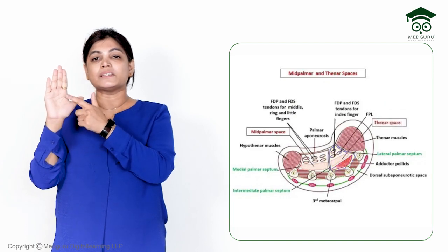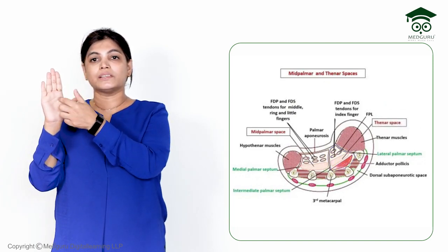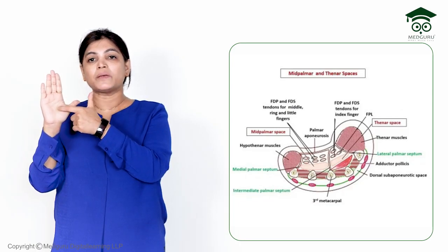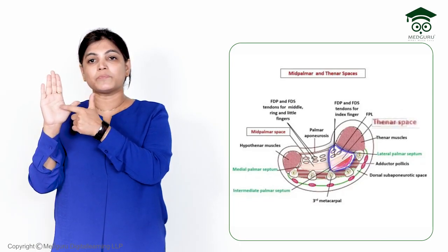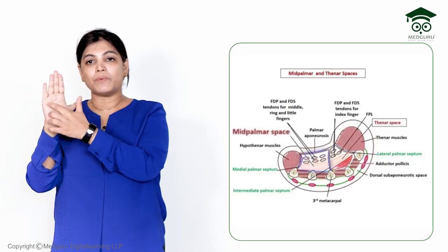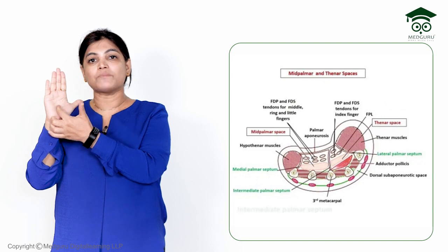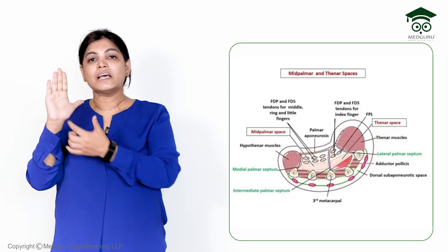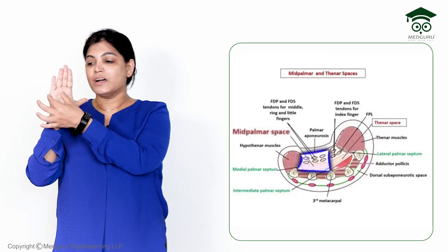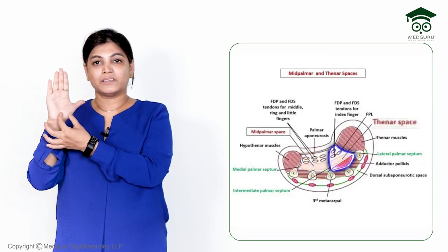The lateral boundary separates the mid palmar space from the thenar space. The thenar space lies below the lateral fingers. In between these two spaces there is an intermediate muscular septum which divides the mid palmar space from the thenar space.